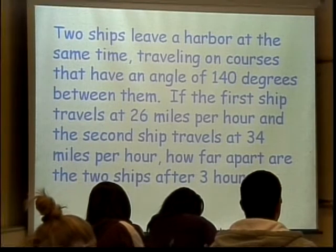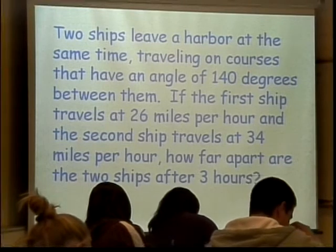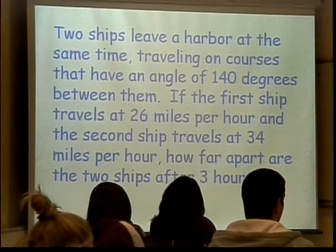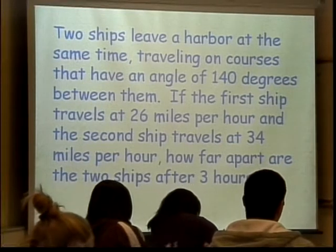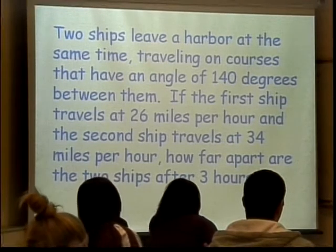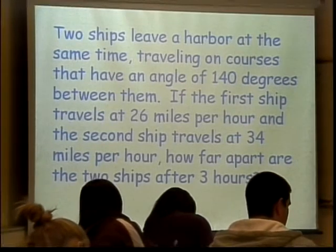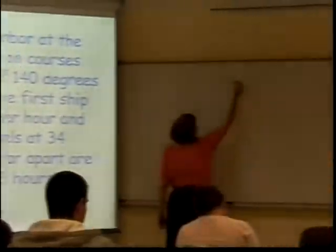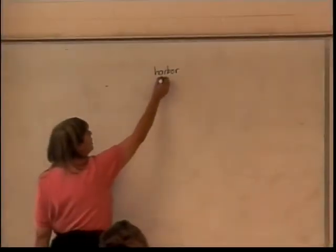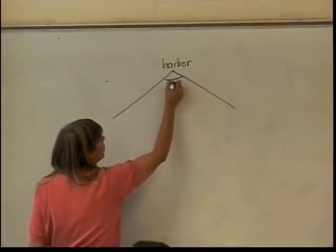One train's going this way and another train's going that way. We're not doing trains, we're doing ships. And we need to use one of the laws of either sines or cosines. Let's figure out which one. The way I have to figure out which one would be to draw a picture and it helps to figure out what you have and what you don't have. So, we've got a harbor here. Ships leave the harbor in between them. There's an angle of 140 degrees. That angle is 140 degrees.